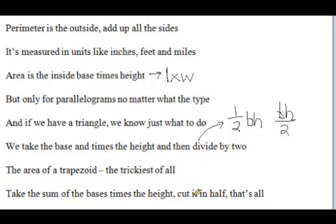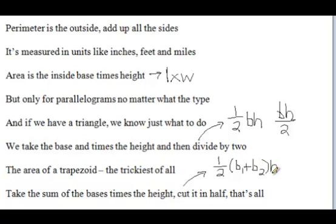And finally, for the trapezoid: take the sum of the bases times the height, cut it in half. That one's probably gonna look like one half, then they'll put B1 plus B2 — the sum of the bases — times the height, cut it in half. So there you go, that's the geometry chant for the quadrilaterals and triangles. Deuces!